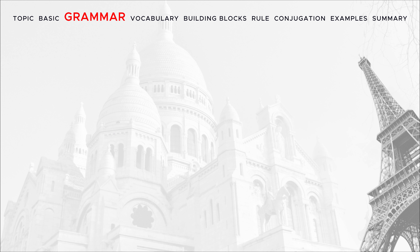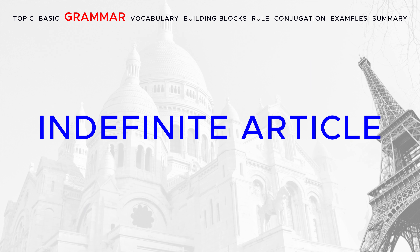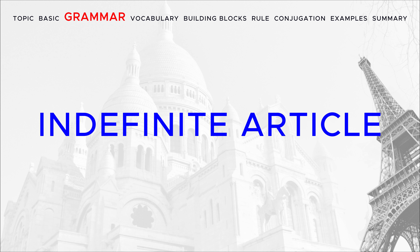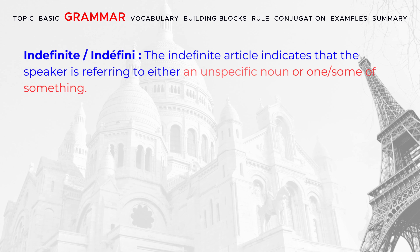In this video, we will learn the indefinite article in detail. The indefinite article indicates that the speaker is referring to either an unspecific noun or one or some of something.